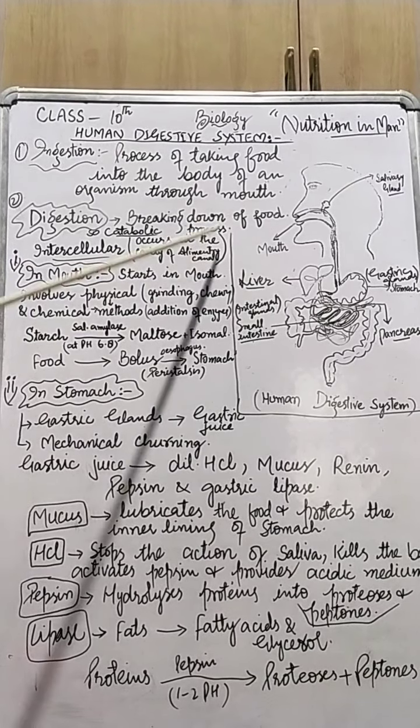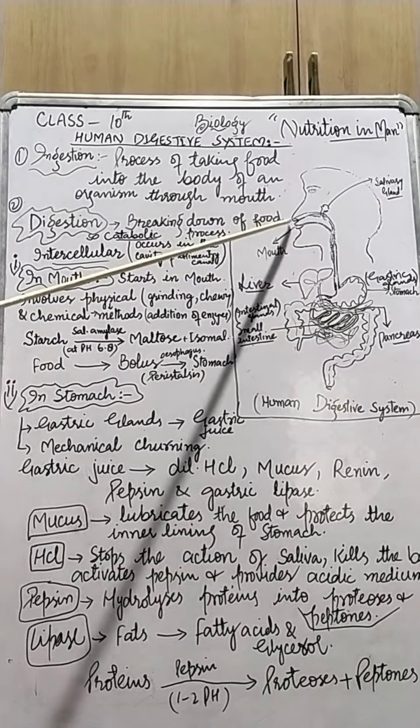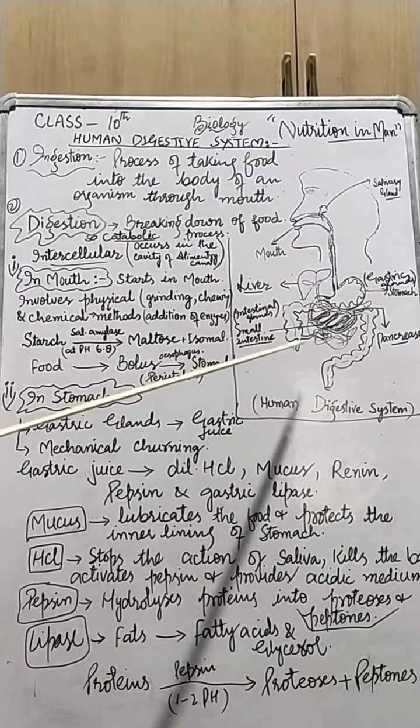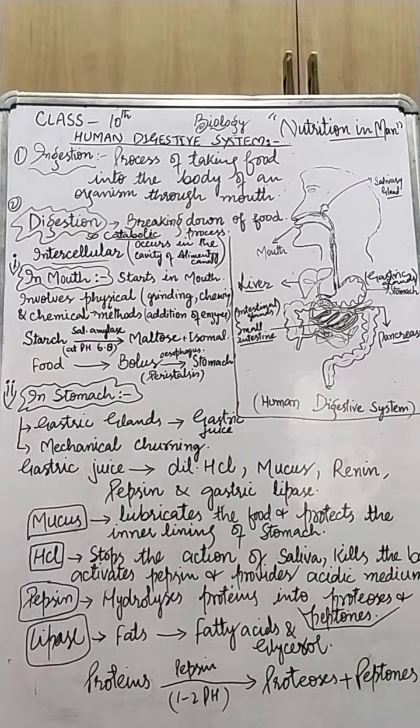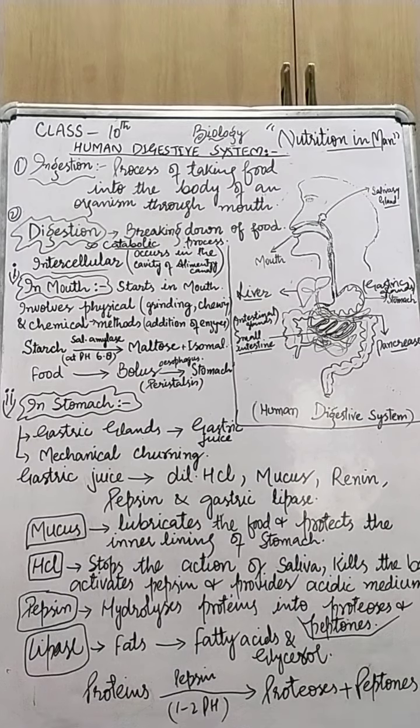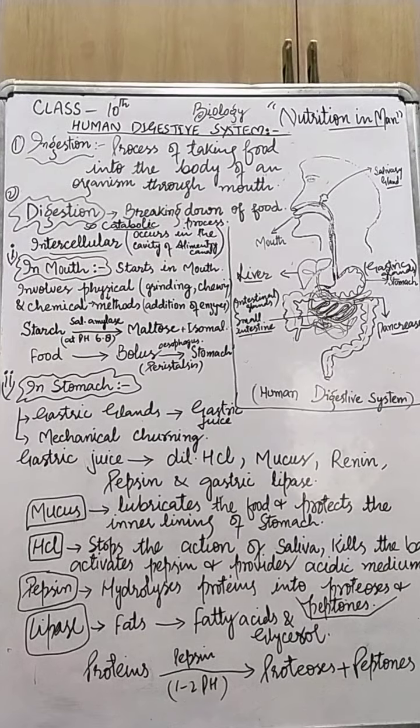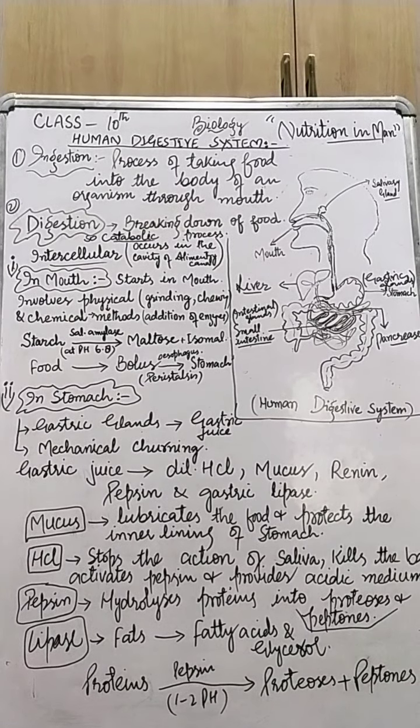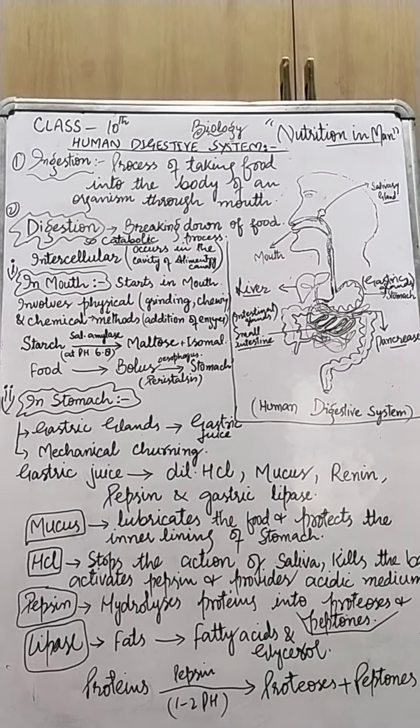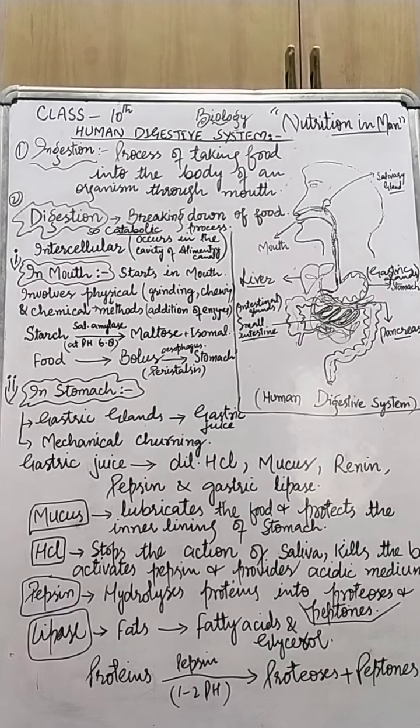For this, the alimentary canal is there. In different parts of the alimentary canal - that is mouth, here, stomach, small intestine - digestion process occurs. Now we will see step by step where digestion starts and where it ends, where digestion is complete, how it happens, which enzymes work, how they work on the food we take, how they break it down into simpler substances.